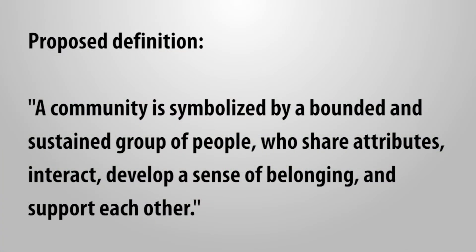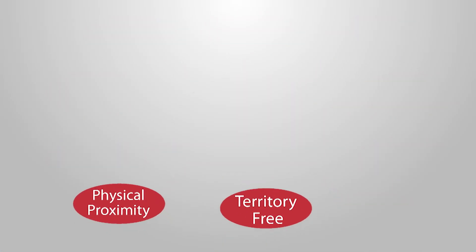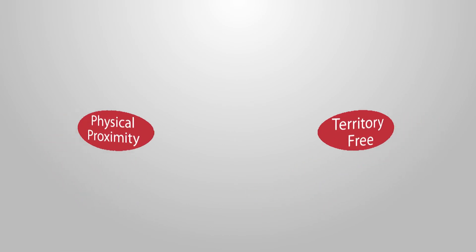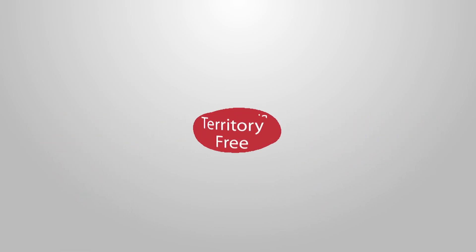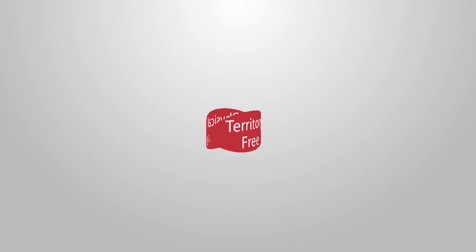We propose a definition of community using the common themes we identified: a community is symbolized by a bounded and sustained group of people who share attributes, interact, develop a sense of belonging, and support each other. Although they are common themes, we did not include physical proximity or territory-free in the proposed definition because they are contradictory. It depends on the context of a community, whether it is related to geography or other factors, such as support or shared attributes.